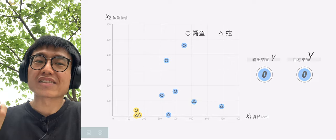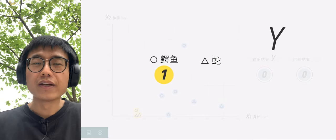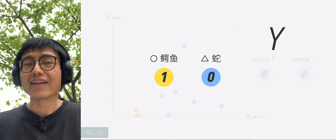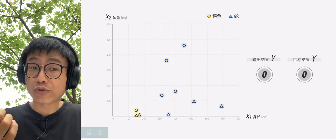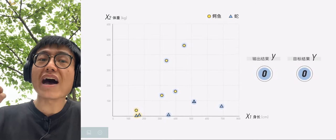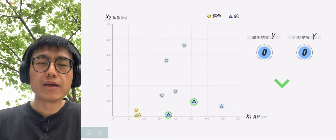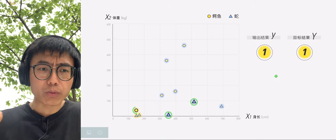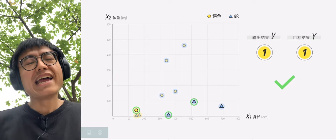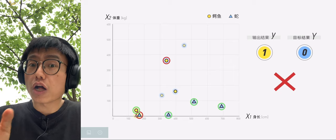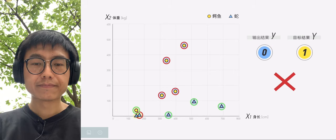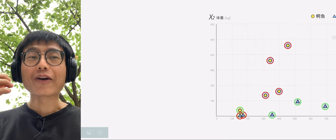In order to determine whether the lowercase y is right or wrong, we need to artificially set an uppercase Y, the correct answer, our goal. The crocodile is 1 and the snake is 0. The classification is correct only if the output value matches the target value, both 0 or both 1. If there is inconsistency between them, then it is wrong.